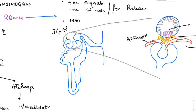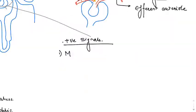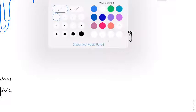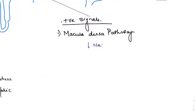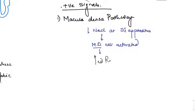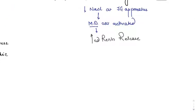The juxtaglomerular apparatus is adjacent to the glomerulus, hence the name JG apparatus. The first positive signal is the macula densa pathway. Macula densa cells are specialized, sensitive cells that detect a decreased sodium load at the JG apparatus, which activates them and leads to increased renin release.